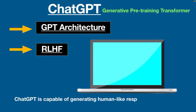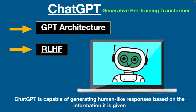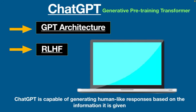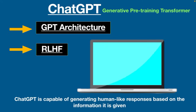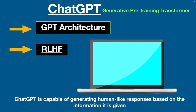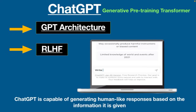ChatGPT is capable of generating human-like responses based on the information it is given. To put it simply, it's like you are interacting with a robot in a natural way. As mentioned earlier, ChatGPT is a chatbot system that uses machine learning to provide answers to almost any questions it is asked.